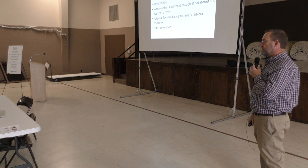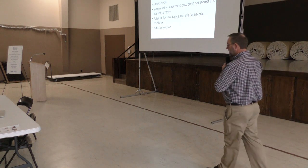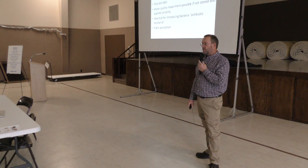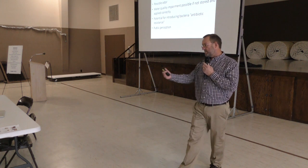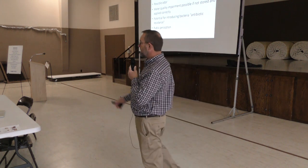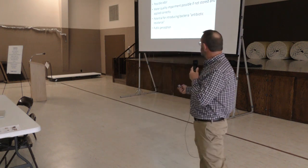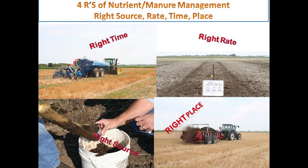Public perception is a big one. If we don't do things right on the landscape, the public is going to get after us, and that's happening in some places. We follow the principles of the four R's of nutrient management within NRCS: putting the right source at the right rate at the right time in the right place. If we can do those four things, we can typically capture the benefits of manure without any of the negatives.